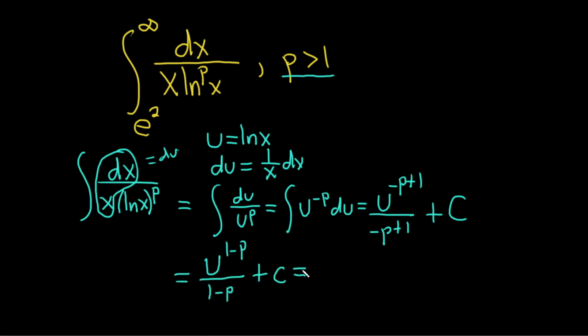And that's equal to 1 over 1 minus p times... And now I'm going to bring this downstairs and flip the signs on the exponent. This is 1 over u to the p minus 1, right? Because when you bring it down, the sign changes plus c.